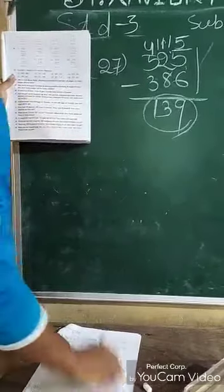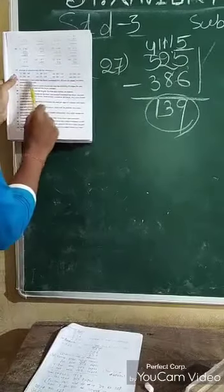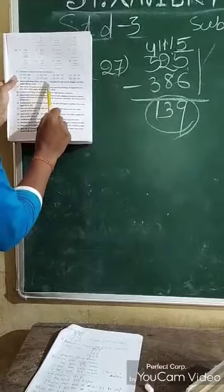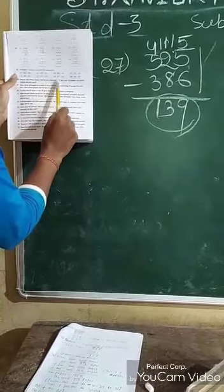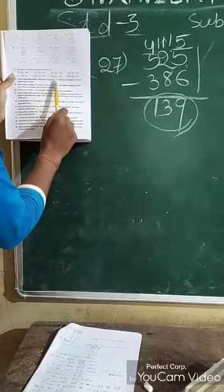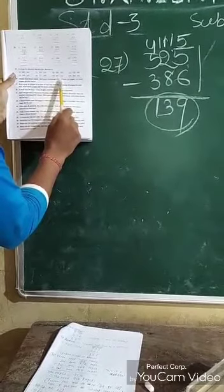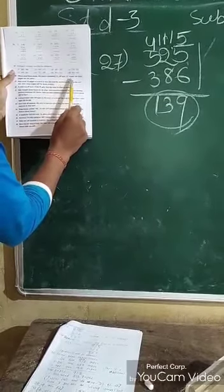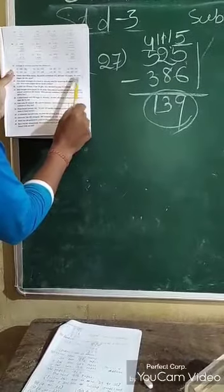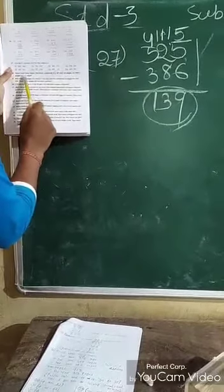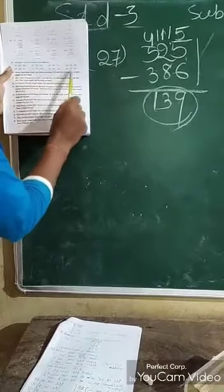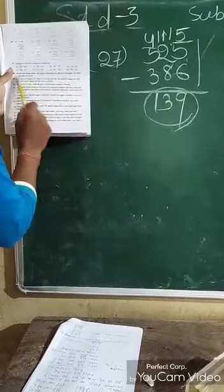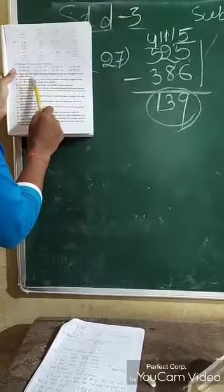Number 29: She read 3 books. The books contain 312, 469, and 132 pages. How many pages did she read in total?